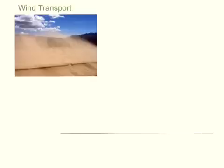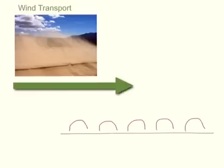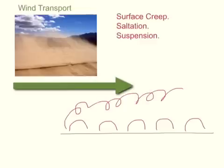The wind direction is very consistent and that is what drives the movement of sand. The heaviest material is dragged along in a process called surface creep. Medium-sized material is moved along in hops in a process called saltation. The lightest material is picked up by the wind and carried in suspension, moving through the air.